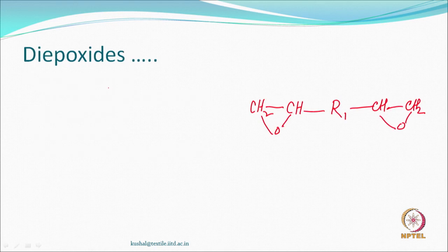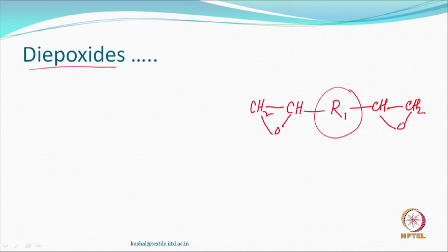Organic chemists can create new molecules based on what we call di-epoxides. The R1 group holding these two epoxy groups on both sides can be anything - aliphatic, aromatic, long chain, short chain - depending on what you want to do. We can appreciate that if the length of the molecular chain changes, the properties expected are going to be different. Nevertheless, it gives a good opportunity to look at epoxides.